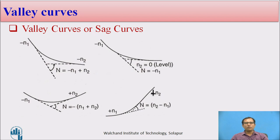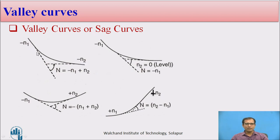Valley curve forms where a descending gradient meets another descending gradient. The calculation of the deviation angle is the algebraic difference between the ascending or descending gradients. Here both are descending gradients, hence N equals minus N1 plus N2.